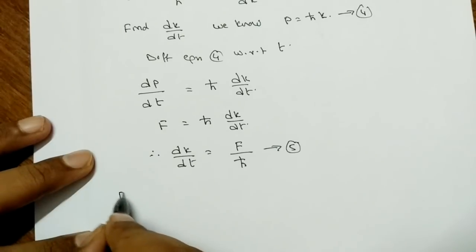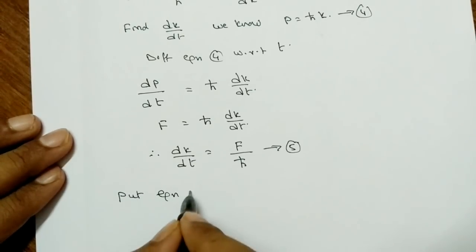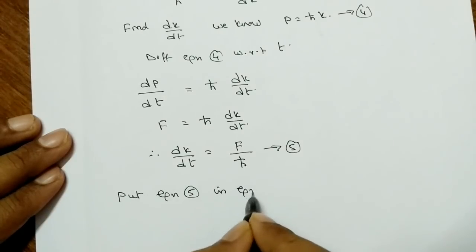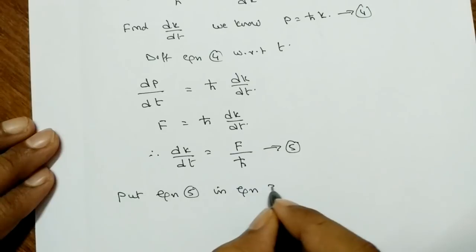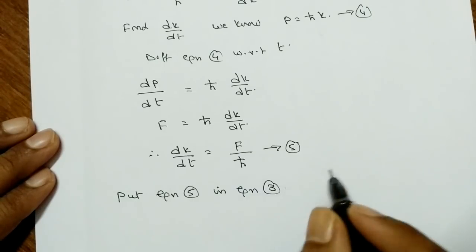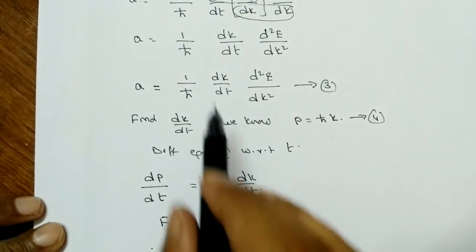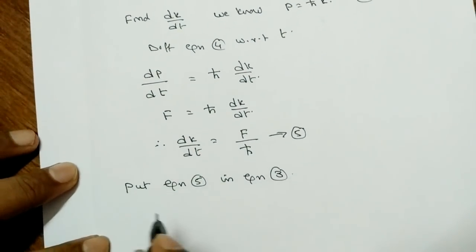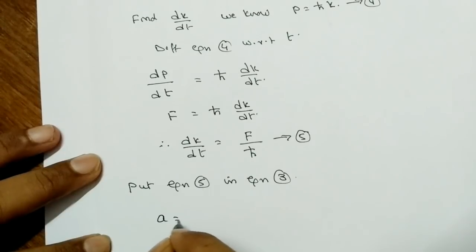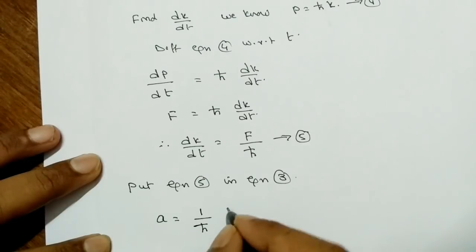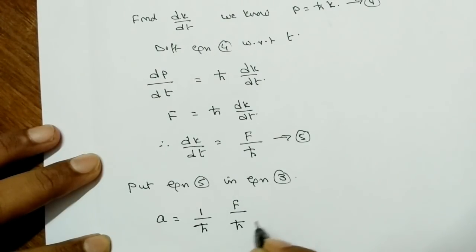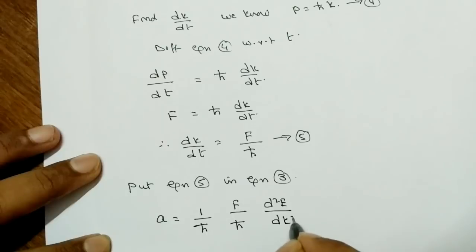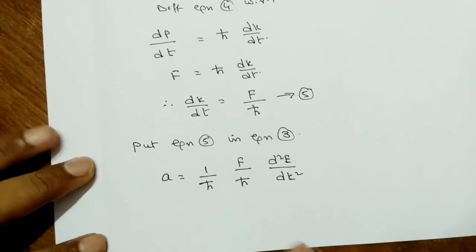Now substitute equation 5 into equation 3, replacing dk/dt with F/ℏ. Equation 3 becomes: a = (1/ℏ) · (F/ℏ) · (d²E/dk²).